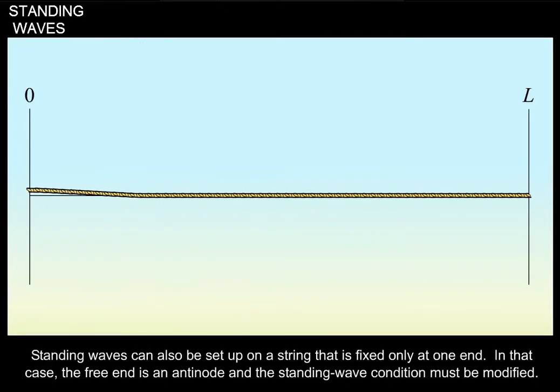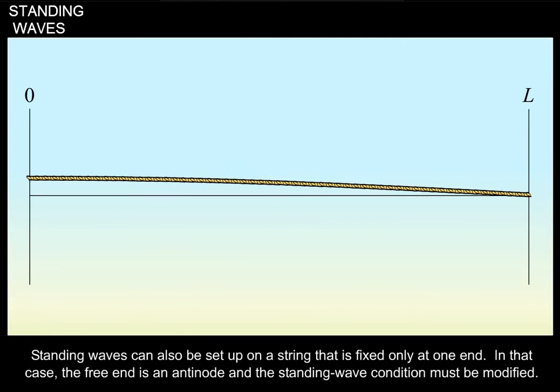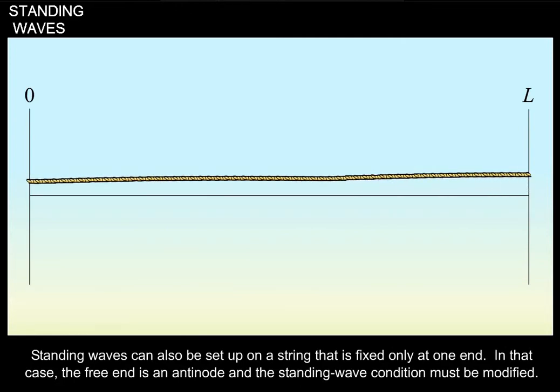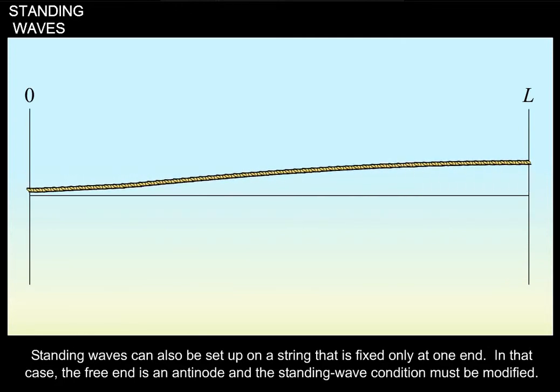Standing waves can also be set up on a string that is fixed only at one end. In that case, the free end is an antinode and the standing wave condition must be modified.